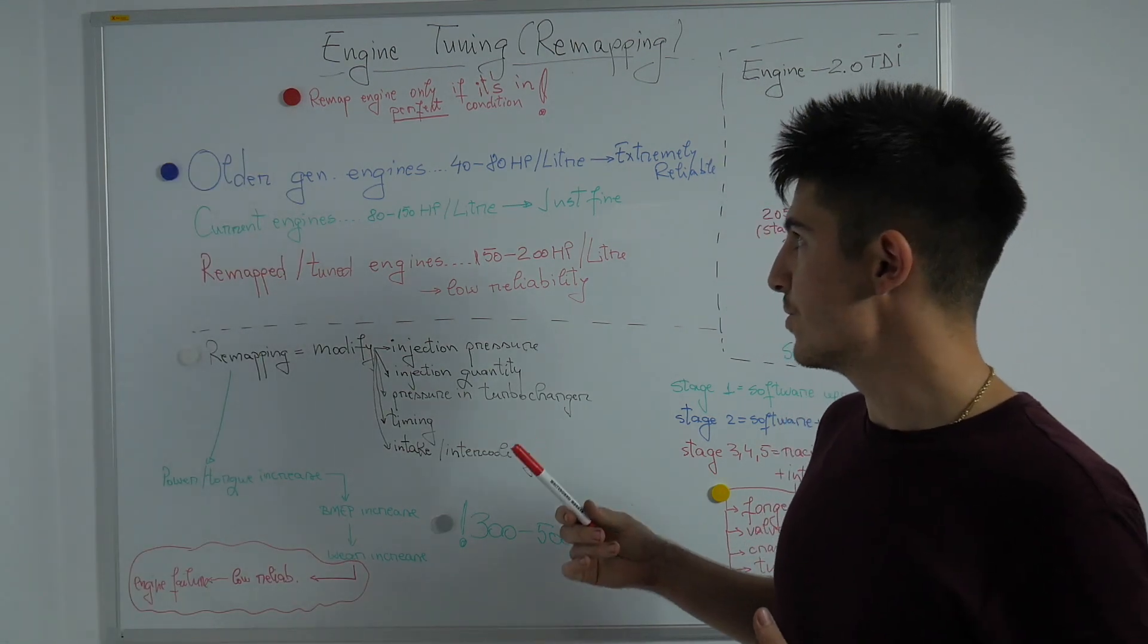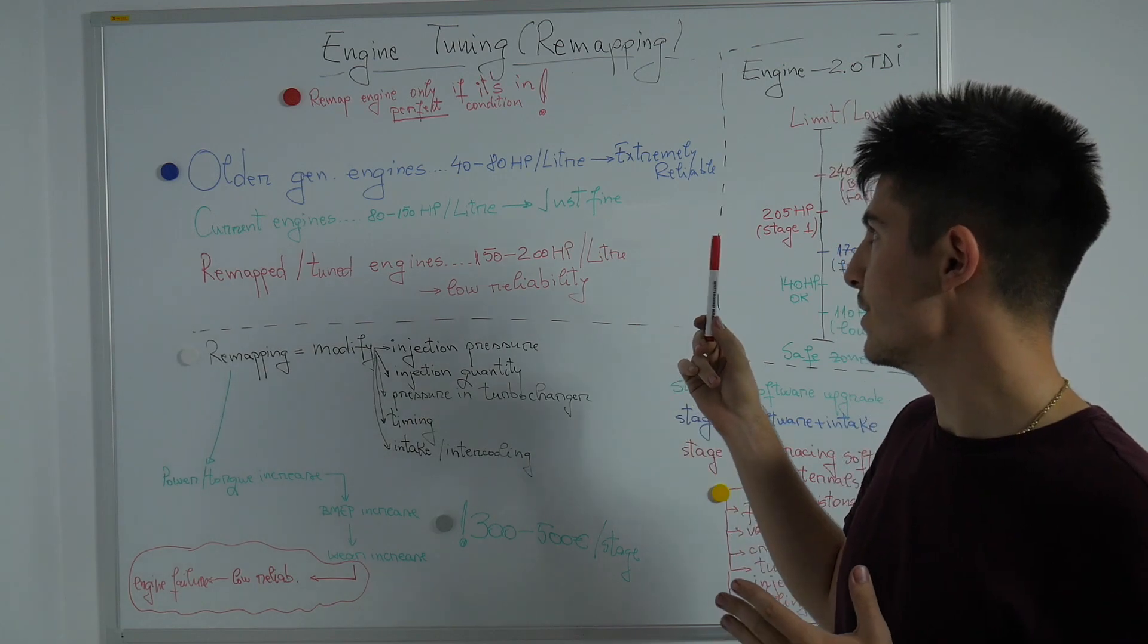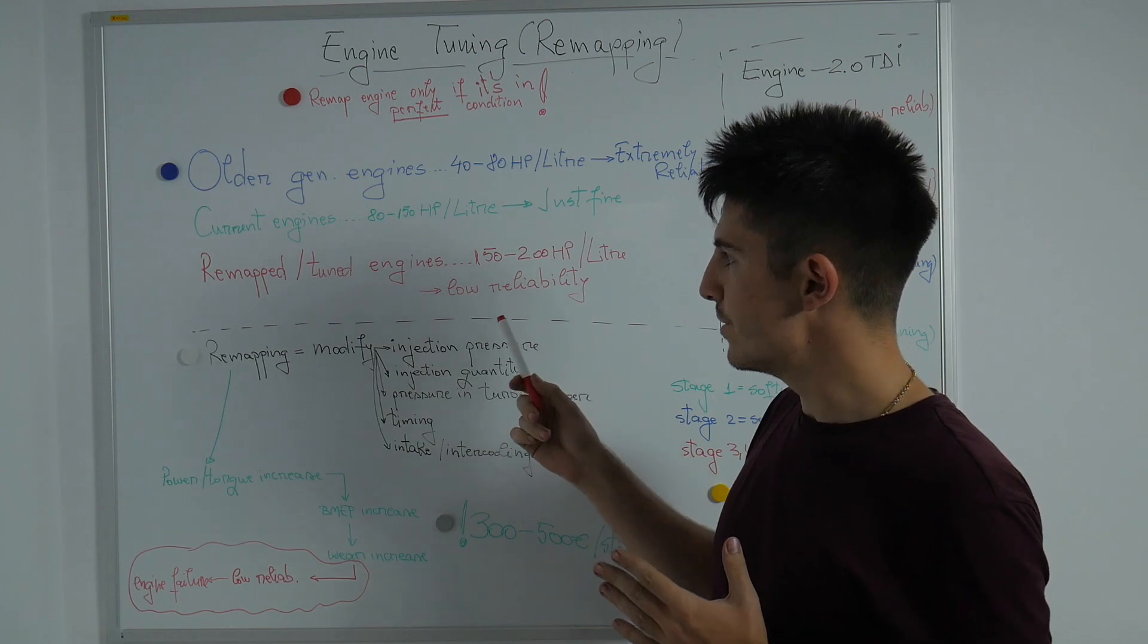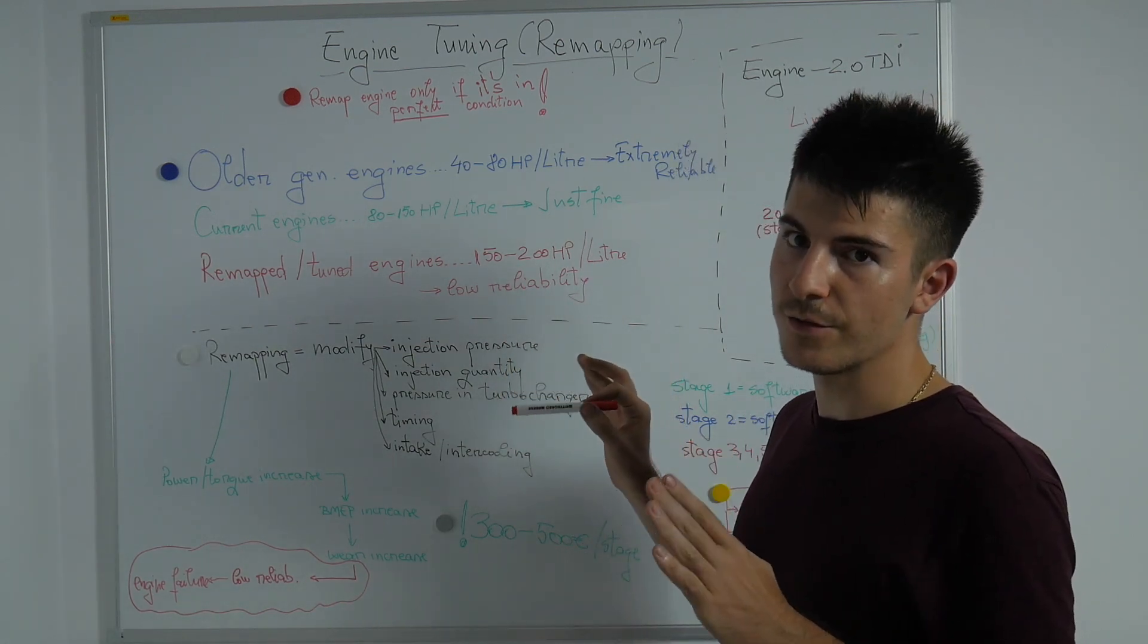So older generation engines used to have from 40 to 80 horsepower per liter which were extremely reliable. Current engines have anywhere from 80 to 150 horsepower per liter which is just fine.